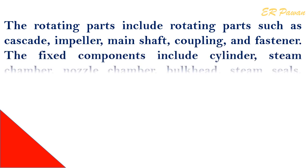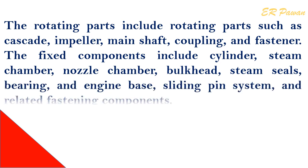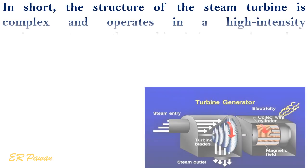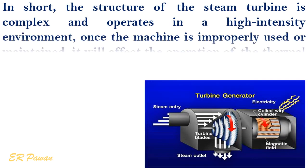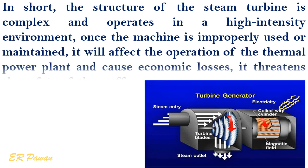The fixed components include cylinder, steam chamber, nozzle chamber, bulkhead, steam seals, bearing, engine base, sliding pin system, and related fastening components. In short, the structure of the steam turbine is complex and it operates in a high-intensity environment. Once the machine is improperly used or maintained, it will affect the operation of the thermal power plant, cause economic losses, and threaten the safety of the staff.